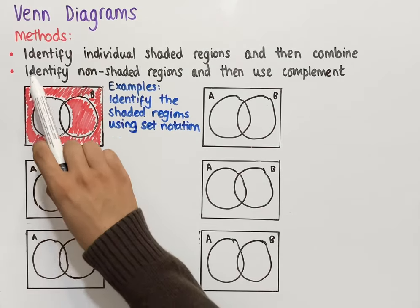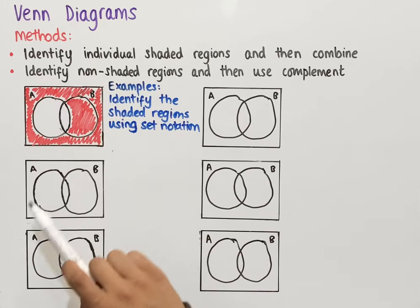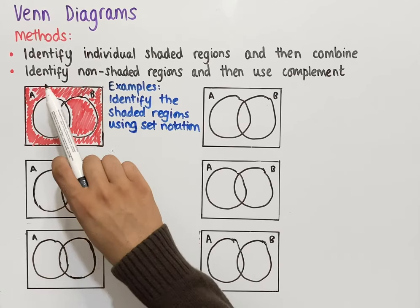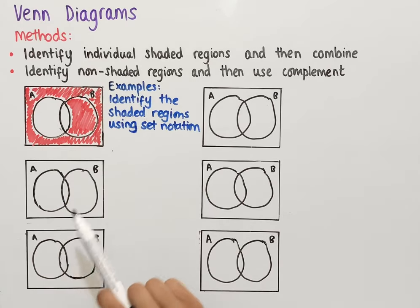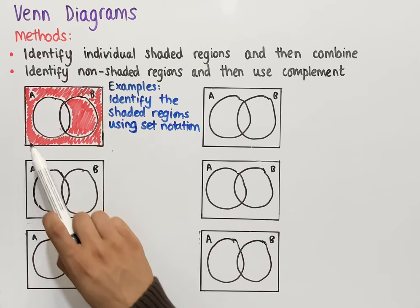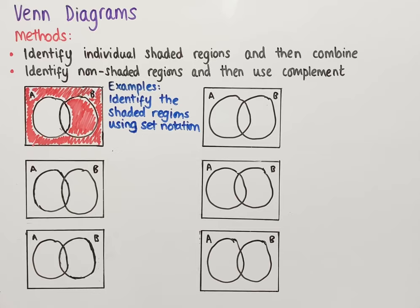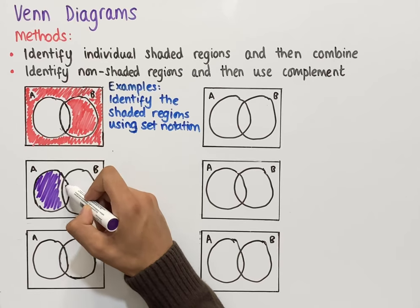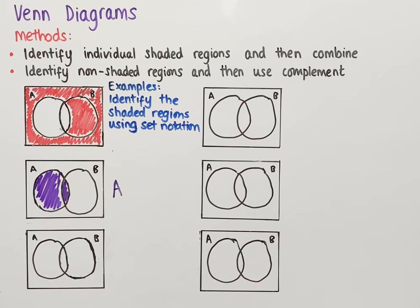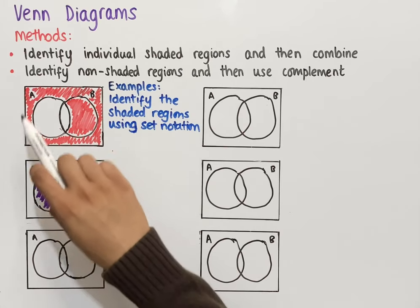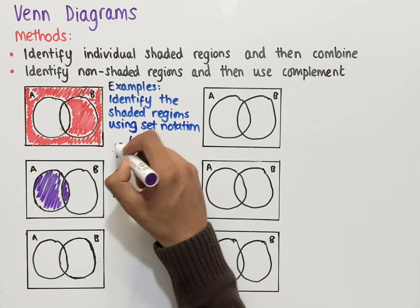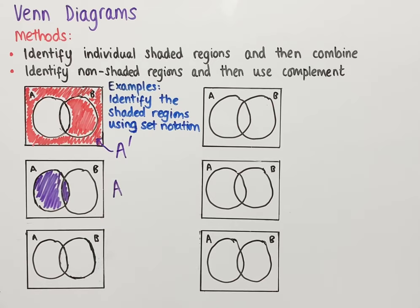We could use the first method of identifying individual regions and combining them, but in this case it might be easier to think about what the non-shaded region is and then use complement. The non-shaded region is the whole circle A. If we want everything outside of that circle — all of the shaded region — we apply complement, so A complement equals this shaded Venn diagram.